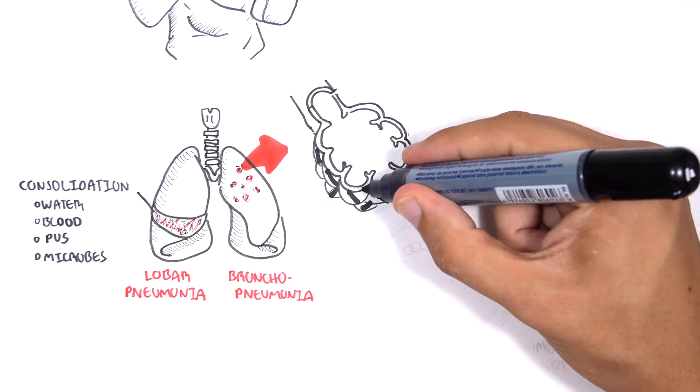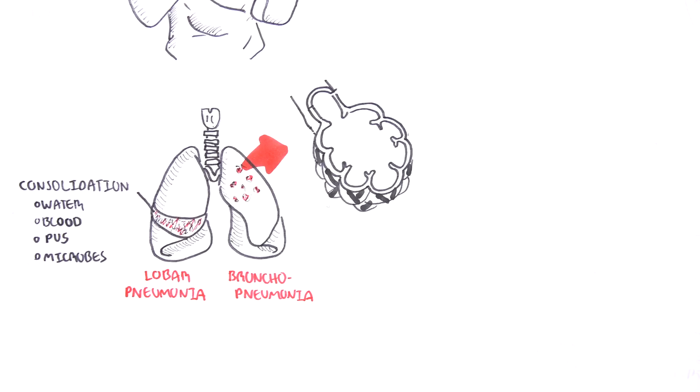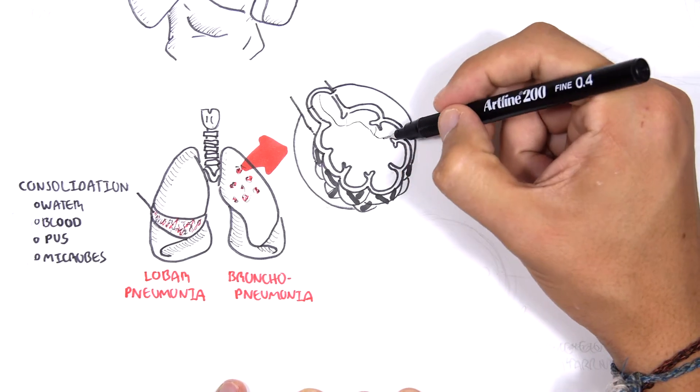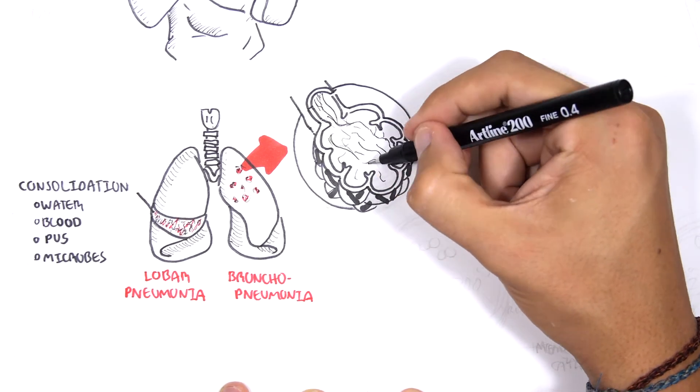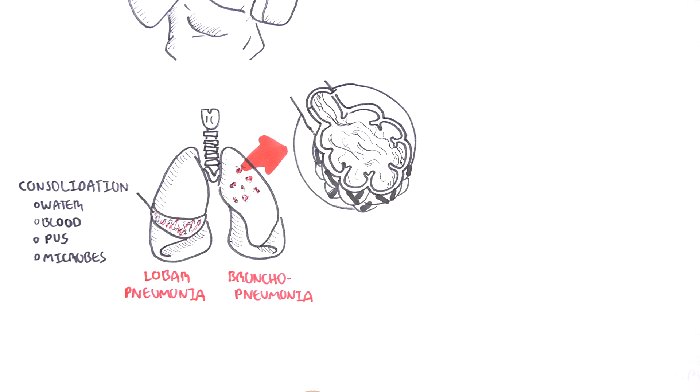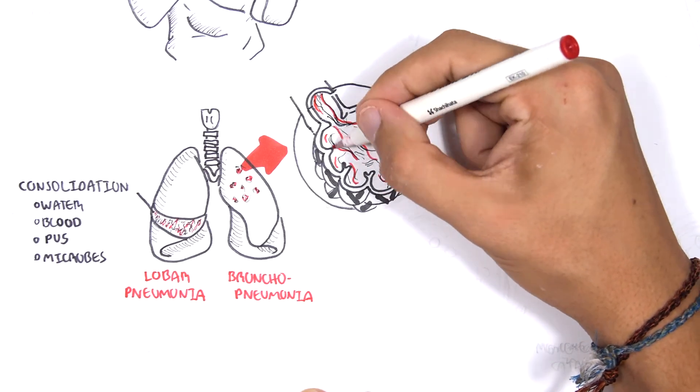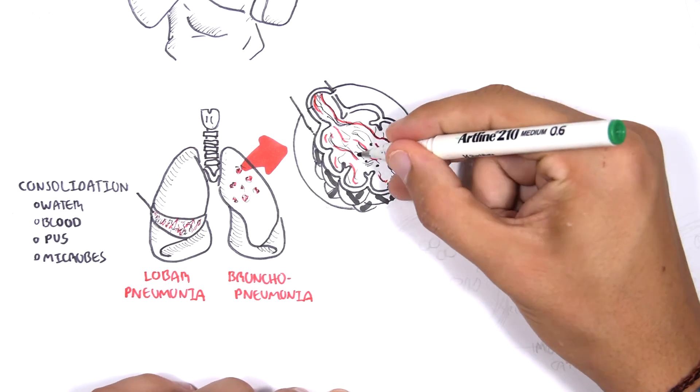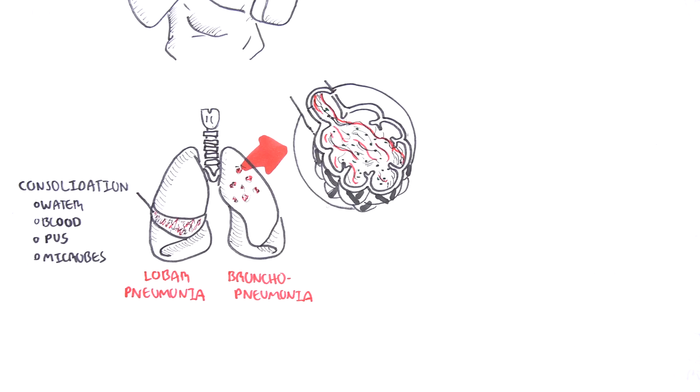Here we are looking into an alveoli, the functional unit of the lungs, where oxygen and carbon dioxide is exchanged during ventilation. As you can see, this alveoli is filled with fluid that shouldn't be there. This is consolidation.